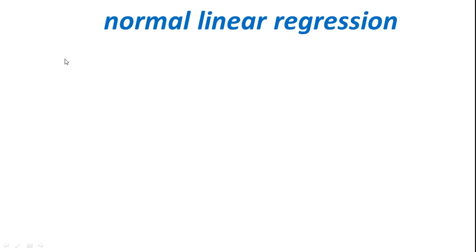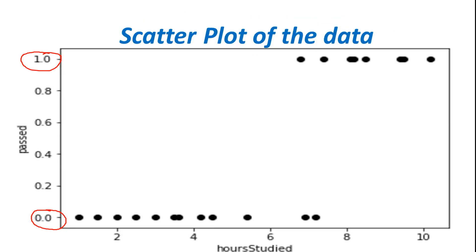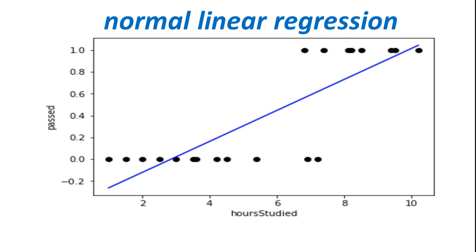So if we do a normal linear regression over our data, this is what happens. We know that the output should be either 0 or 1, but our linear regression is producing all sorts of values between 0 and 1. That's not the actual problem. The actual problem is it is producing negative values and values greater than 1 which are impossible values and which have no meaning.